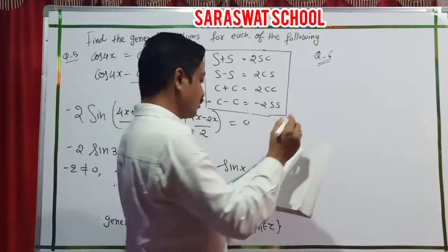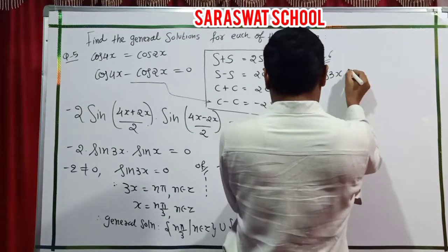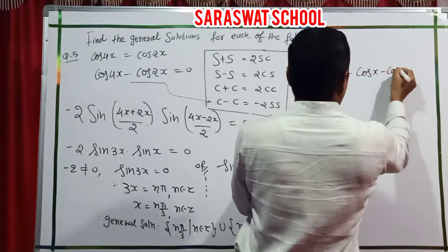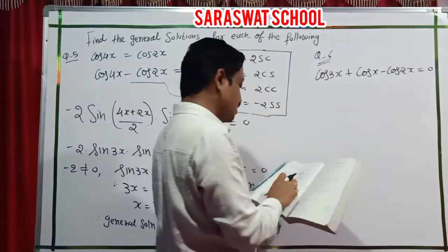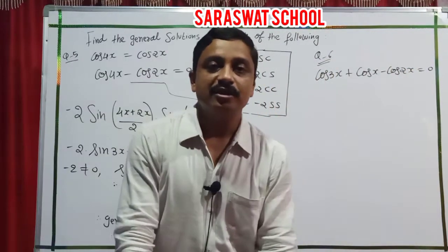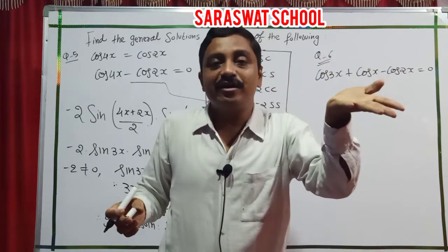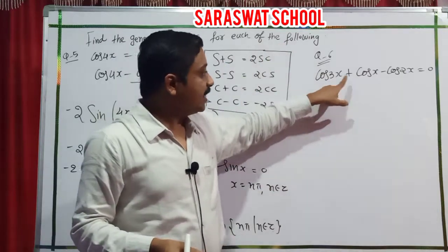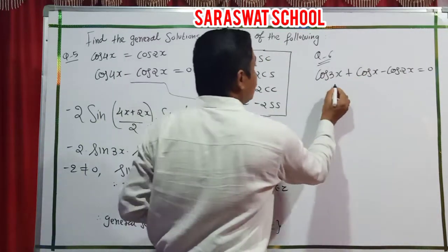Question 6: cos 3x plus cos x minus cos 2x equals 0. Three terms are given, so don't worry — always take the highest angle with the lowest angle. Highest is 3x, lowest is x. I apply the C plus C property.